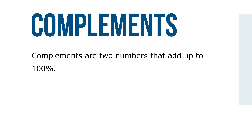Complements are two numbers that add up to 100%. The trade discount rate and the net price factor are complements of each other. This means that if we know one of them, the other can be found by subtracting from 100%.